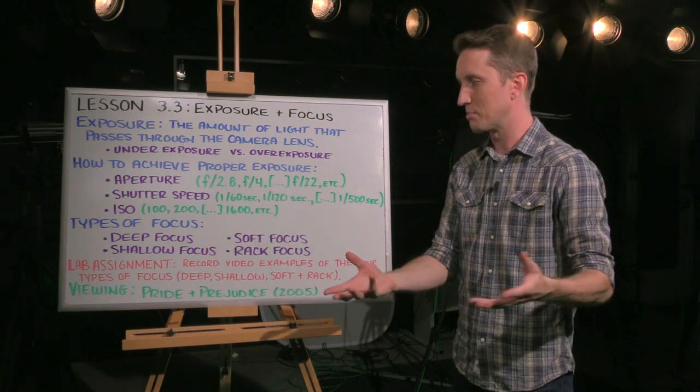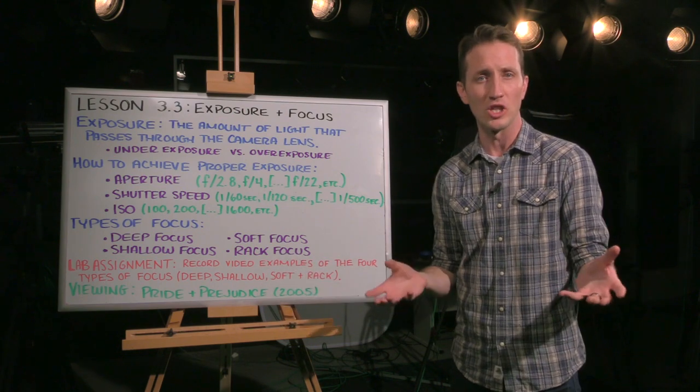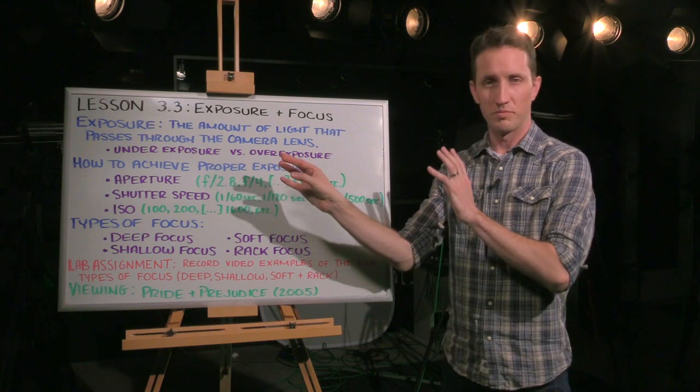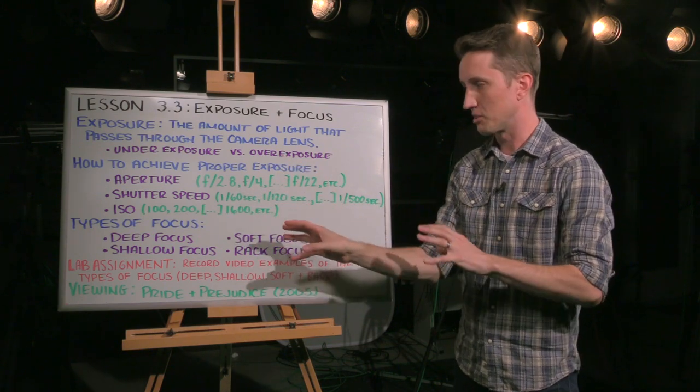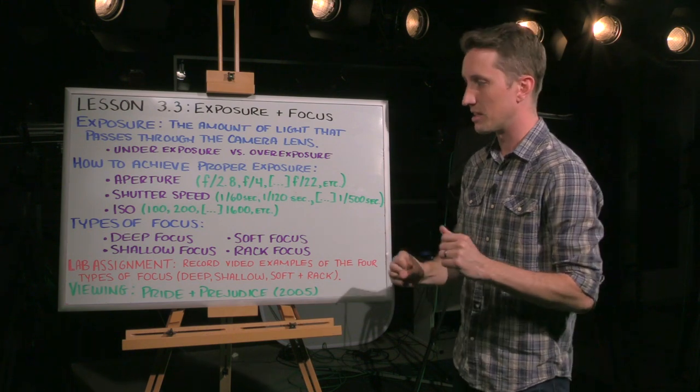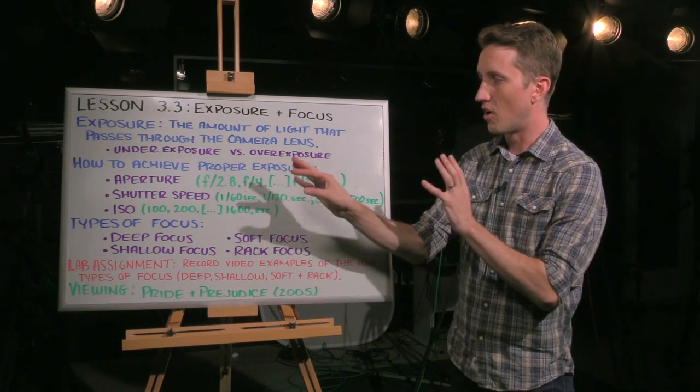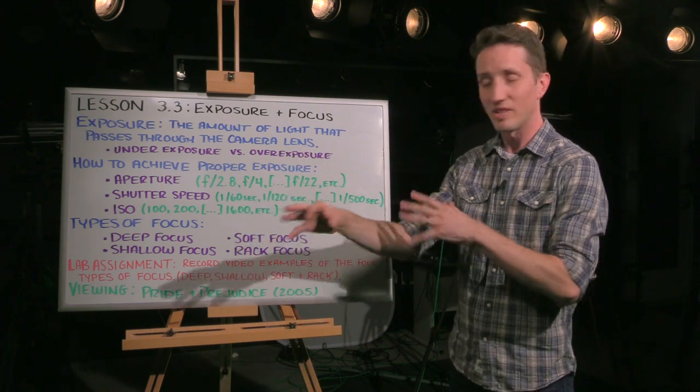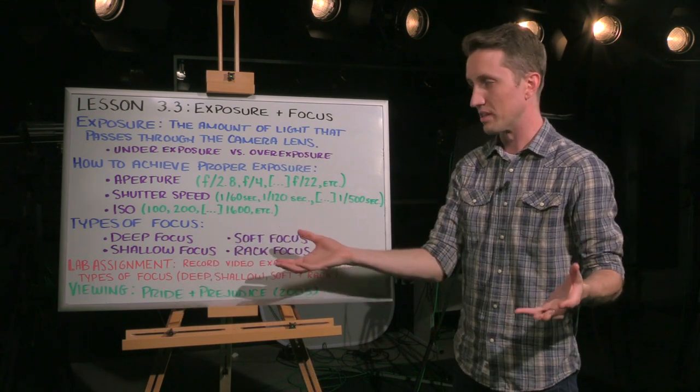And then the aperture is measured in f-stops and it has to do with how much light you're allowing into the camera. And when you are able to balance aperture, shutter speed, and ISO, you can get a properly exposed image.